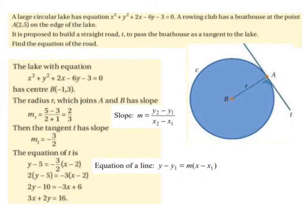So remember, a tangent is a line that touches a circle or a curve at one point only. So this line here would be a tangent with one point of contact or one point of intersection. Find the equation of the road. So we need the equation of this line.